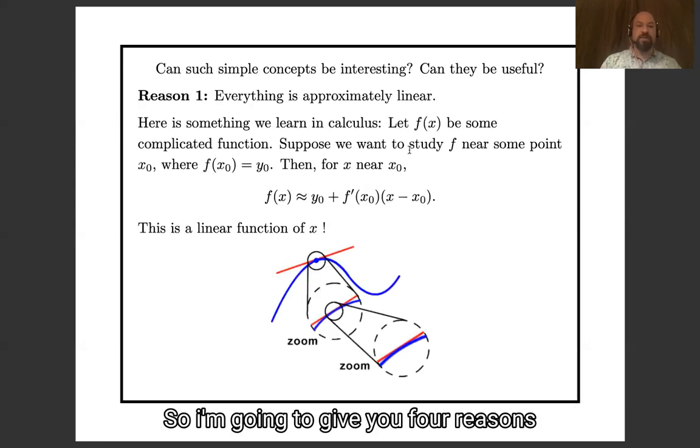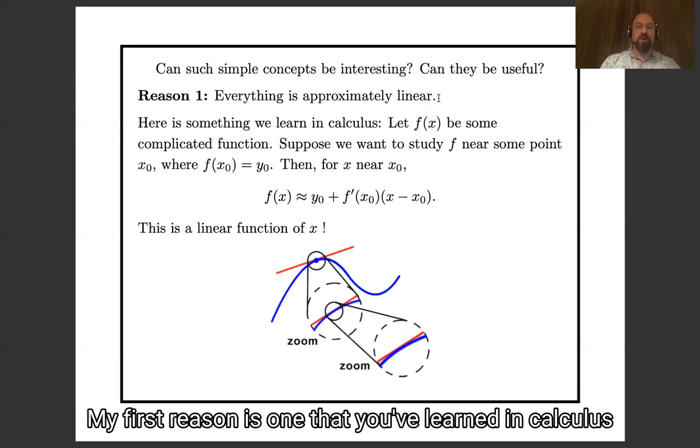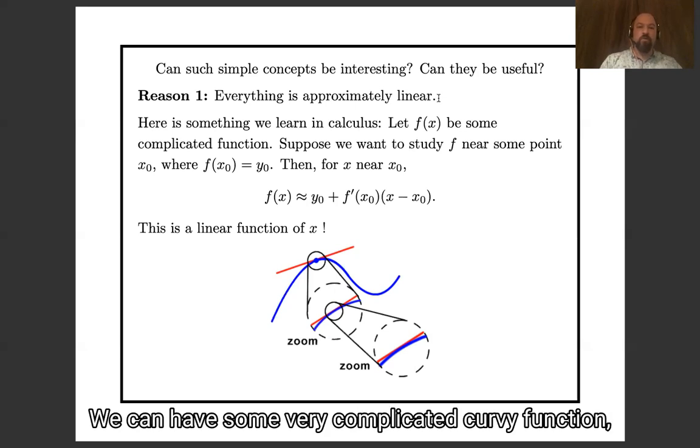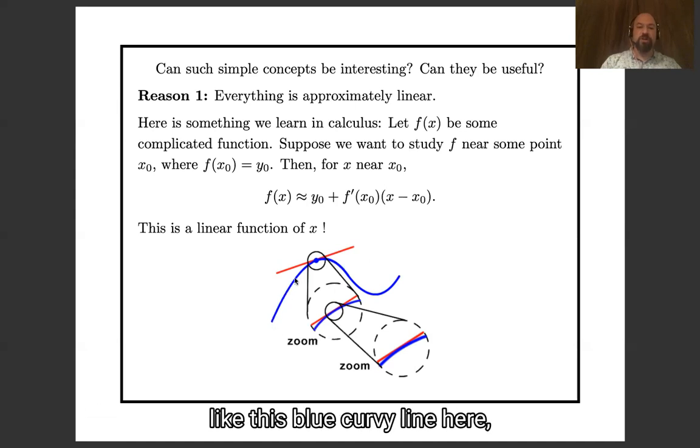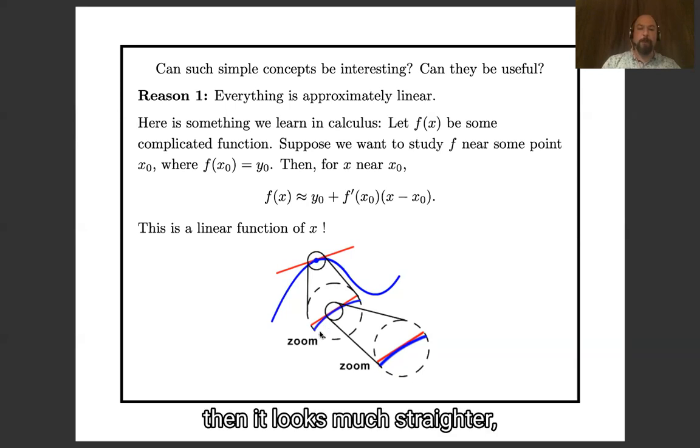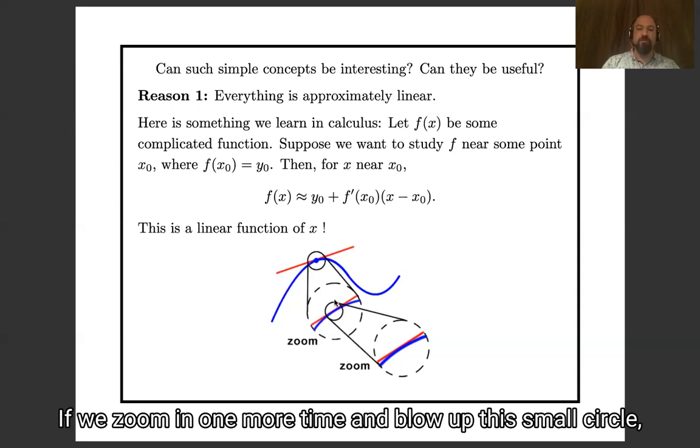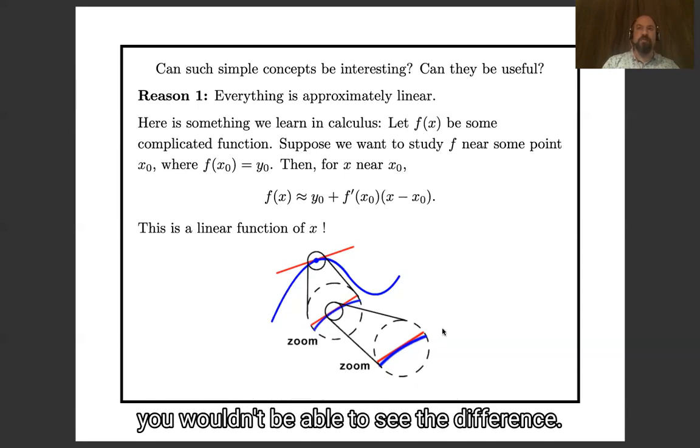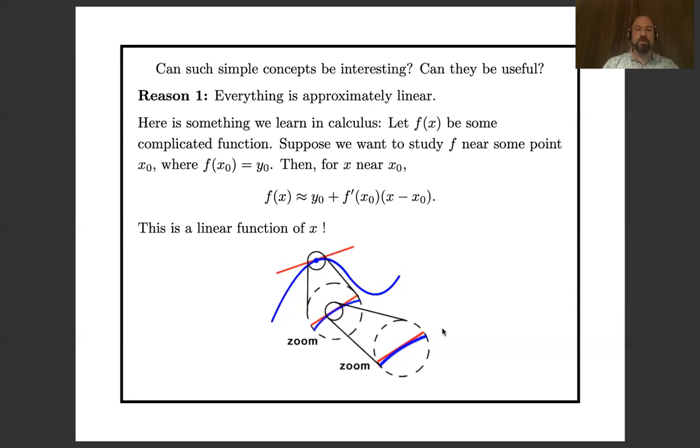So I'm going to give you four reasons. And my first reason is one that you've learned in calculus, which is that everything is approximately linear. We can have some very complicated curvy function, like this blue curvy line here. And if we zoom in on it, and look at just what happens inside this little circle, then it looks much straighter. It's pretty close to this red line. If we zoom in one more time and blow up this small circle, then it's almost the same as the red line. And if we zoomed in one more time, you wouldn't be able to see the difference.